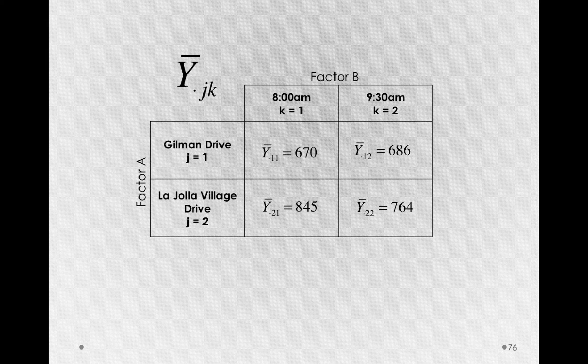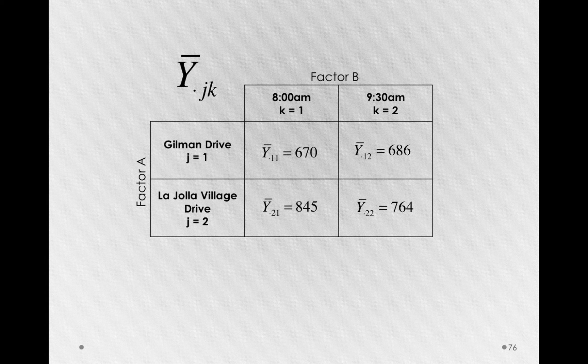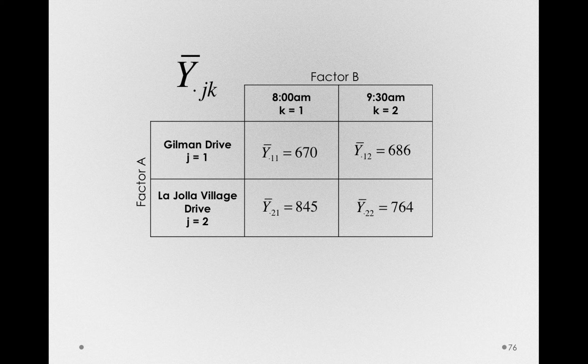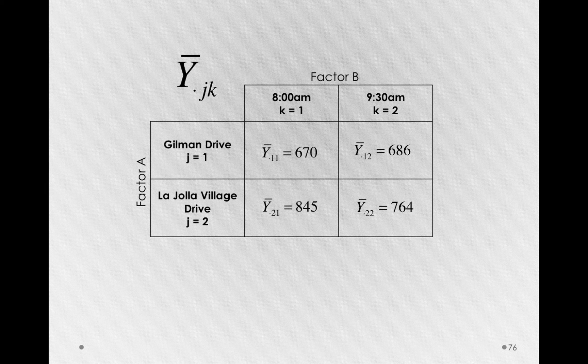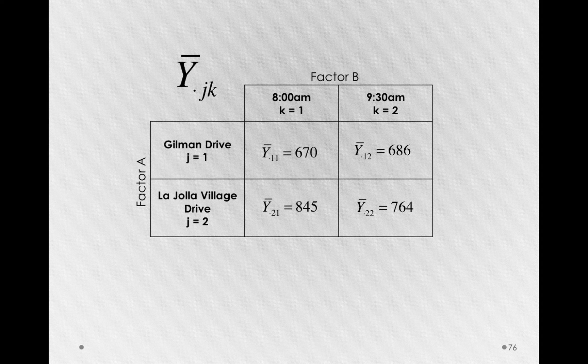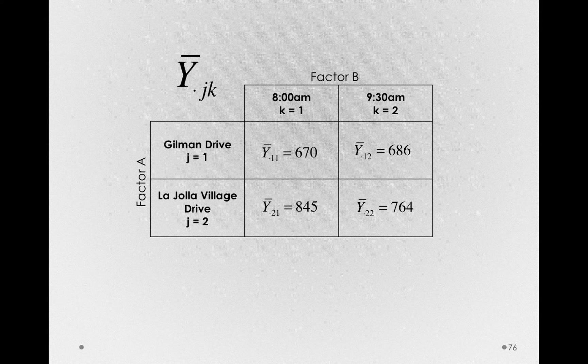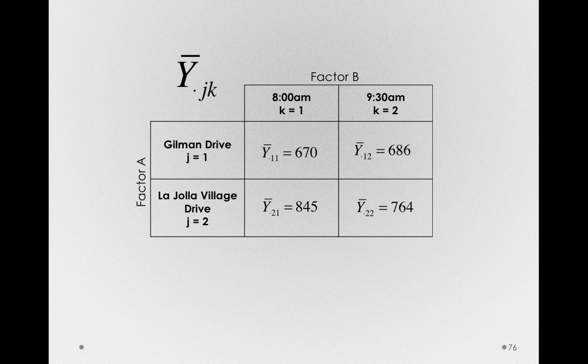If you use JMP and just use the distribution platform for any of these individual groups, those are simply the means you would find. The purpose of doing our linear model is that we'll decompose these means into the separate components, the components that will allow us to test the overall effect of each factor, plus the interaction between factors, the degree to which there's some unique effect in certain combinations.